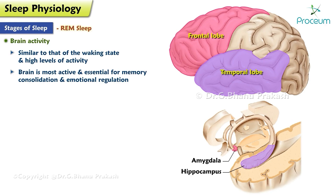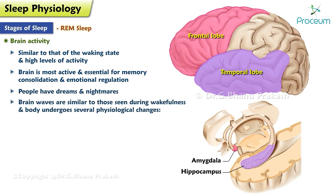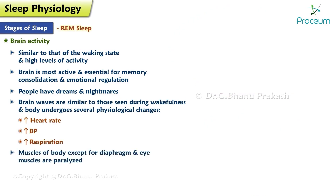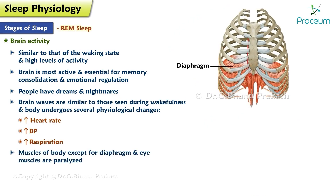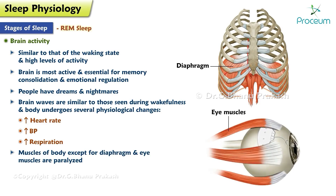REM sleep is the stage when people have dreams and nightmares. During REM sleep, brain waves are similar to those seen during wakefulness, and the body undergoes several physiological changes including an increase in heart rate, blood pressure, and respiration. The muscles of the body, except for the diaphragm and eye muscles, are paralyzed during REM sleep, which prevents people from acting out their dreams.